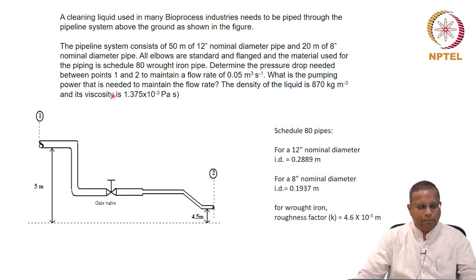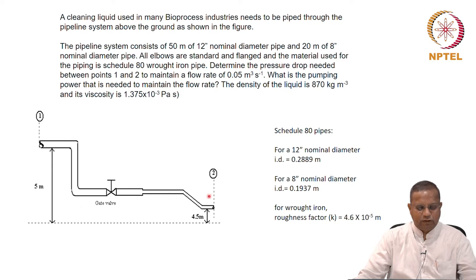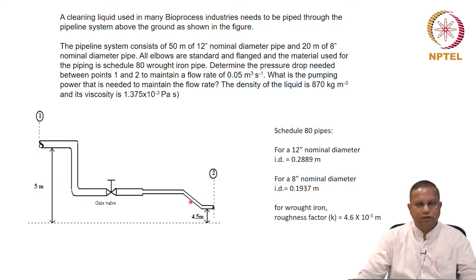What is the pumping power needed to maintain the flow rate? The density and viscosity of the cleaning fluid that is pumped through the piping network are given.